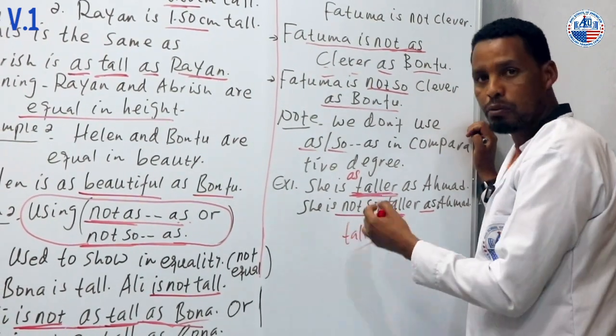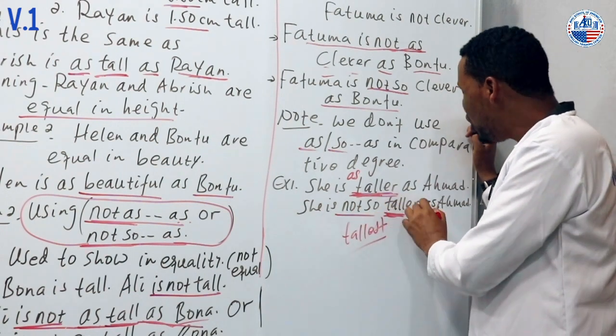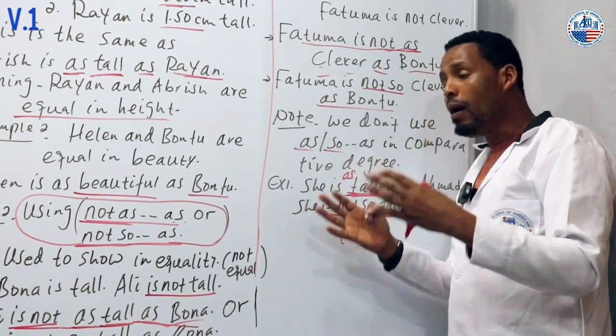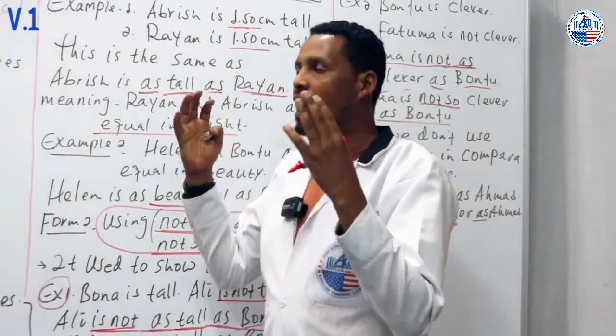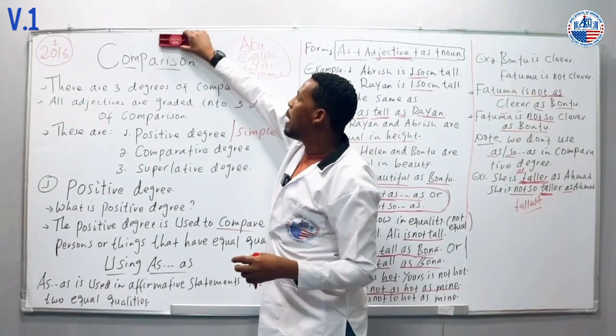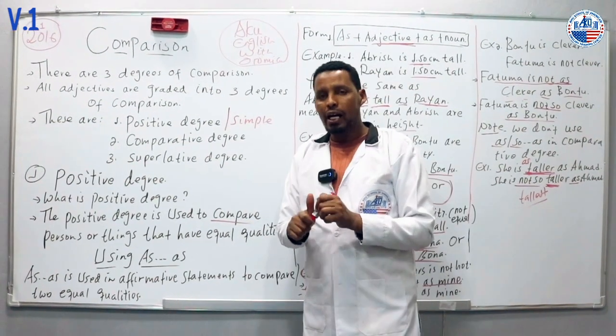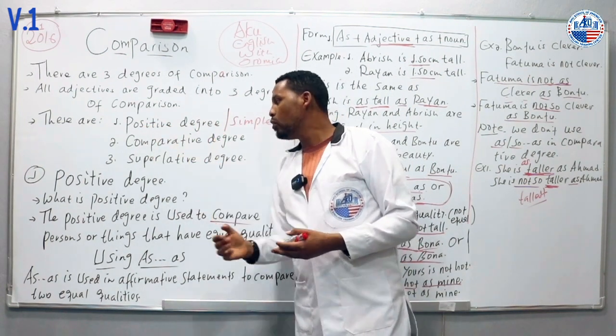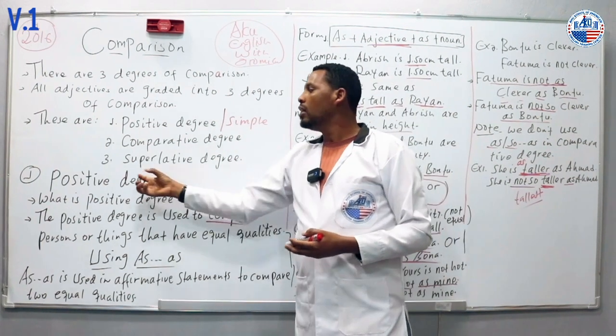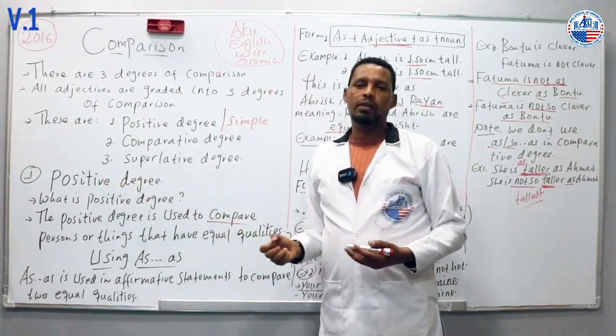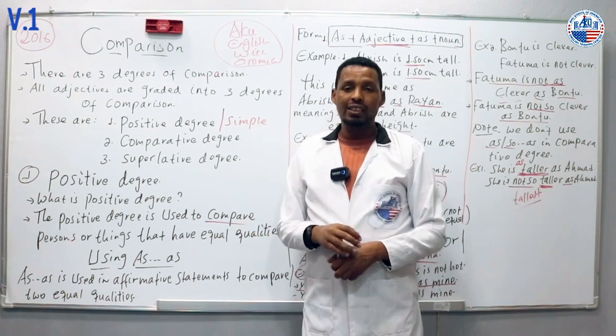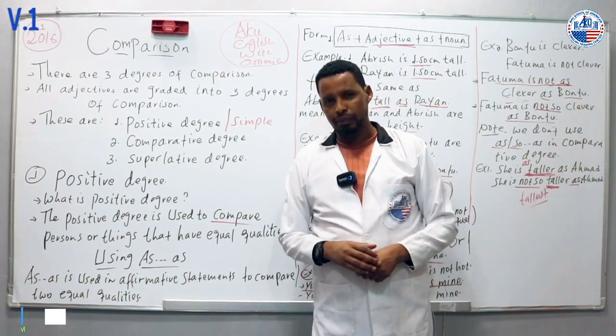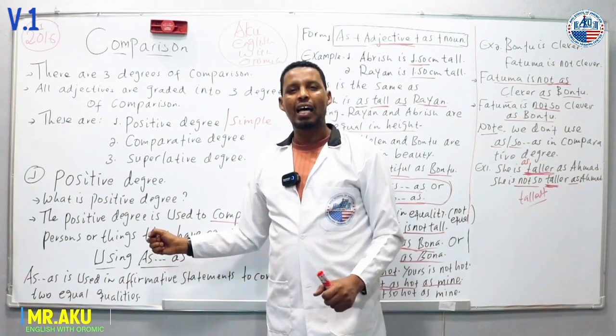We only use 'as...as' or 'not so...as' in the positive degree. When you come to comparative degree, you don't use these forms. Remember this important rule about comparison.